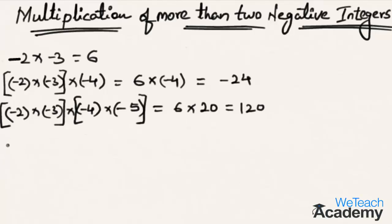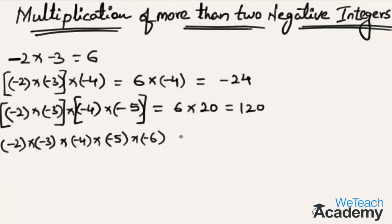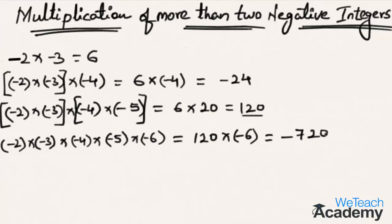Now let's multiply five negative integers: minus 2 multiplied by minus 3 multiplied by minus 4 multiplied by minus 5 and multiplied by minus 6. From the above example we observed that minus 2, minus 3, minus 4, and minus 5 gives a product of 120. So 120 multiplied by minus 6 is minus 720, since a product of a positive and negative integer is a negative integer.